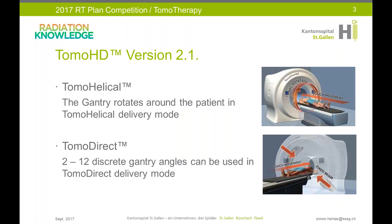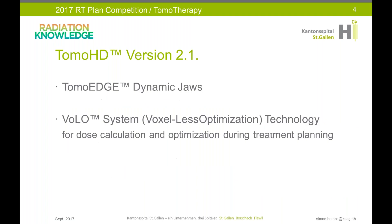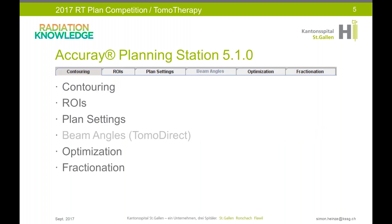The HD in Tomo HD stands for Tomohelical and Tomodirect. In Tomohelical mode, the gantry rotates around the patient. In Tomodirect mode, two to twelve discrete gantry angles can be used. Our machine has in addition the Tomohelical Edge and the Volo system. This technology allows faster dose calculation and optimization during treatment planning. We are planning with software version 5.1. This presentation is oriented to the structure of Tomohelical planning software — for each tab I will give you some general information and some plan-specific details.